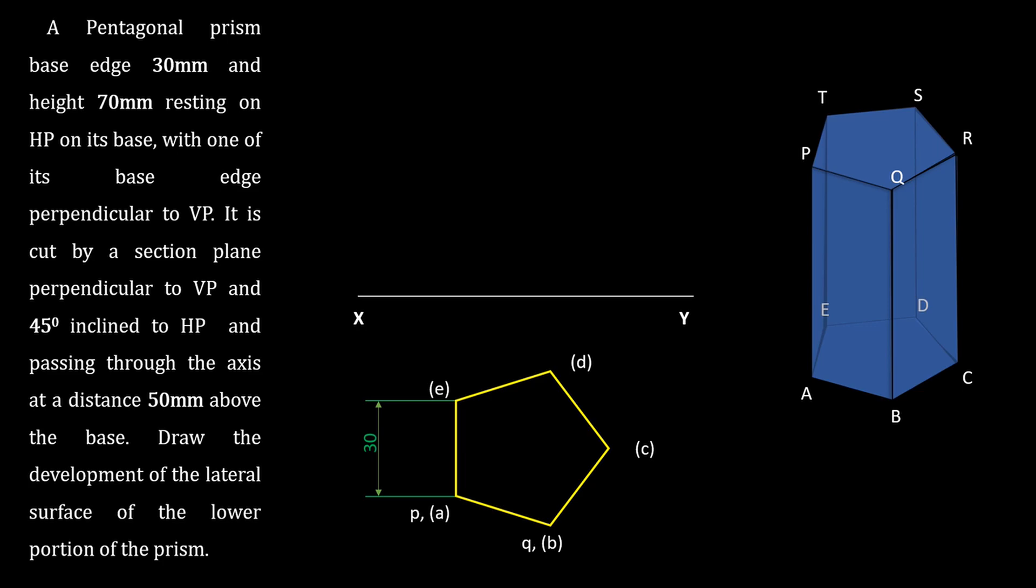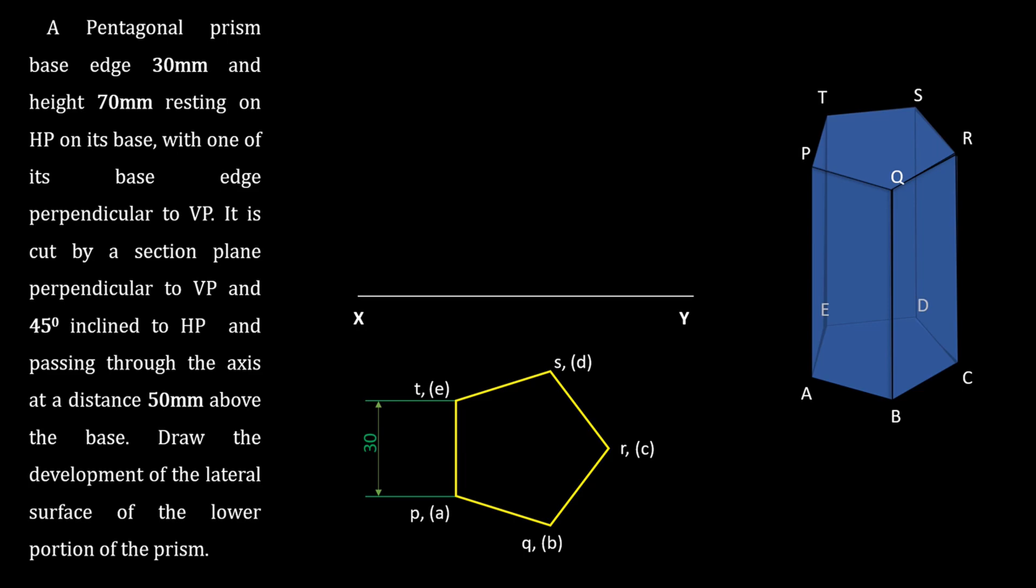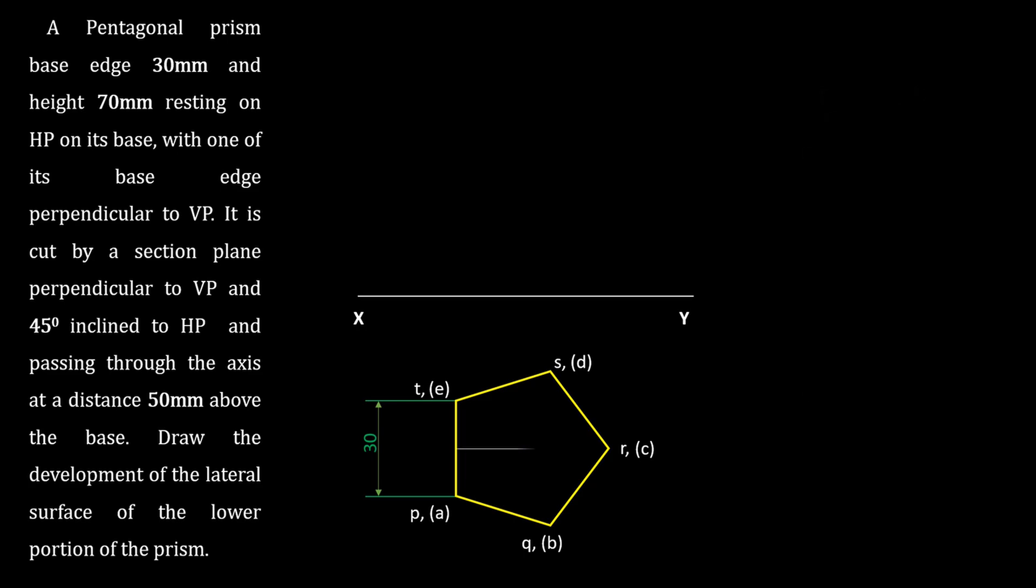Top face P, Q, R, S and T. Let's mark the axis by joining lines from one corner to the midpoint of the opposite edge. Now let's go for the front view.